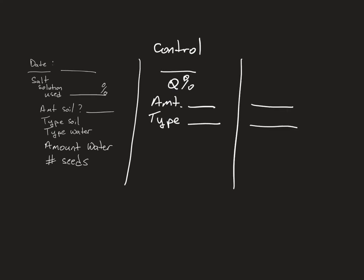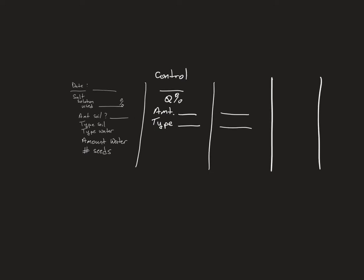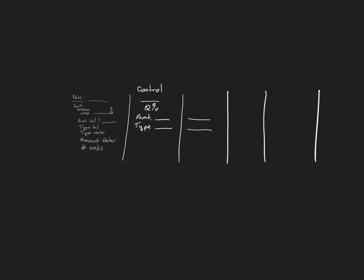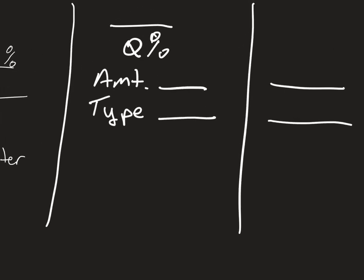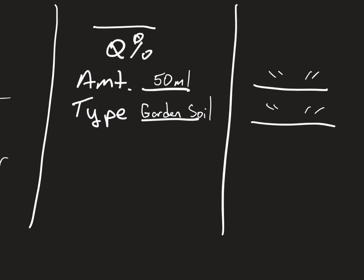For the control group and for each experimental group, it's all going to be the same. Type of soil is garden soil — normally you'd say loamy, silty, sandy, or acidic, basic, neutral, but we're going to use the term 'garden soil' for all of them. The amount — let's say 50 milliliters — and it's going to be the same for all of them.